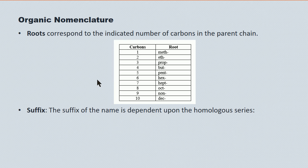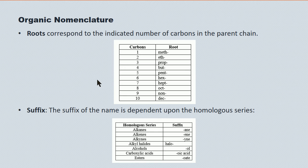The suffix identifies the homologous series upon which the compound exists. The alkanes are the '-anes', the alkenes are the '-enes', the alcohols are the '-ols', and so on. We'll do the alkanes today, but we'll do the other series in subsequent lectures.